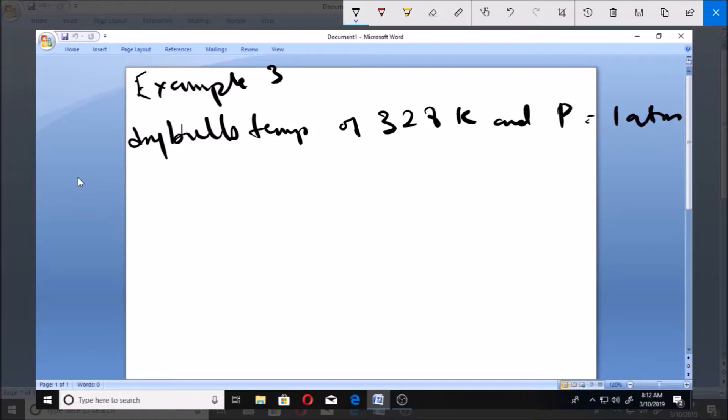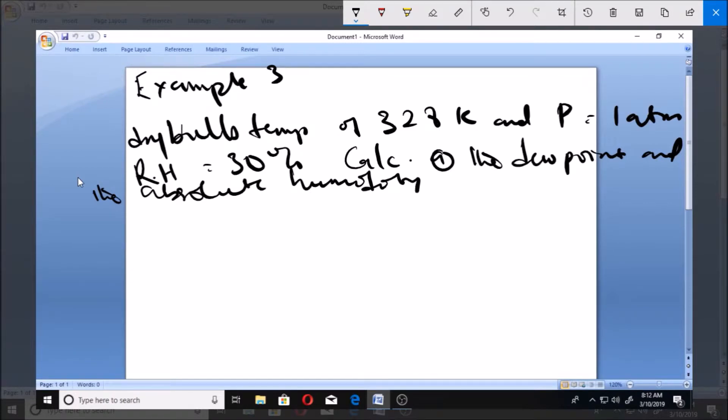It has a relative humidity of 30%. Calculate for the mixture: (a) the dew point and the absolute humidity, (b) the enthalpy per unit mass of dry air relative to 273 kelvin.